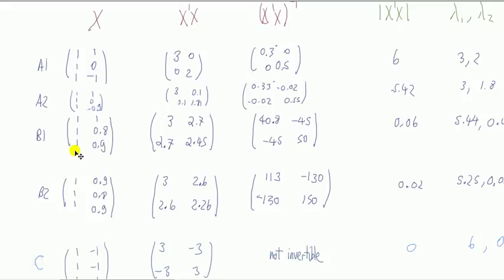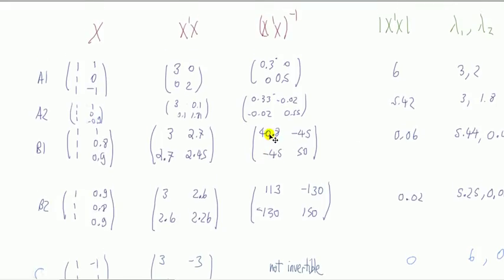Now let's compare B1 and B2. In case B, we have high but not perfect multicollinearity — one vector is almost the same as the other, almost aligned. Looking at the x-transpose-x inverse, we notice the variances are suddenly massive compared to before. The covariances have also changed sign and are big — negative in this case. This is compared to the near-zero covariances seen previously.